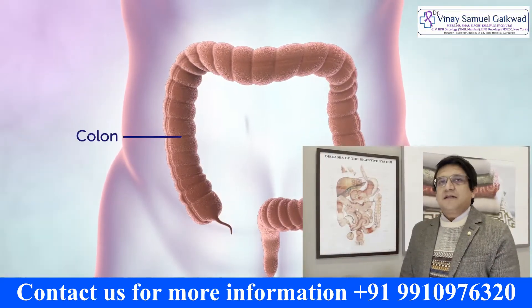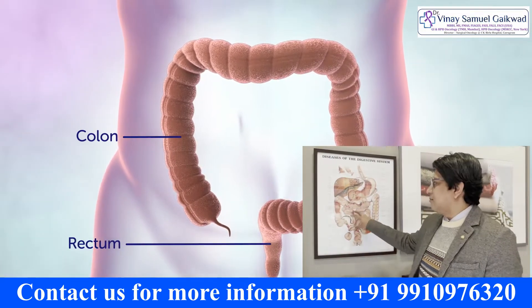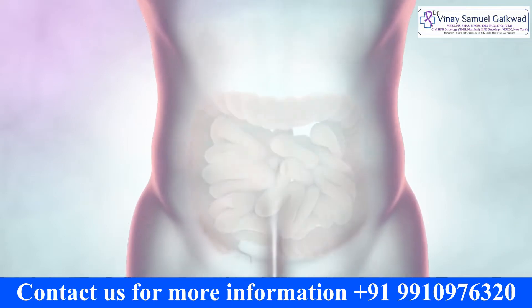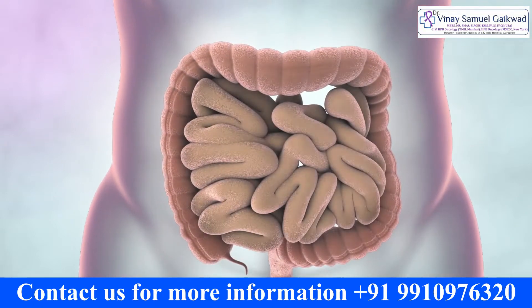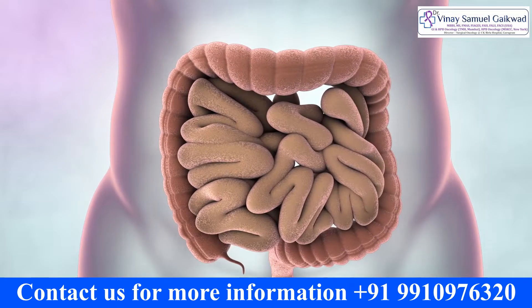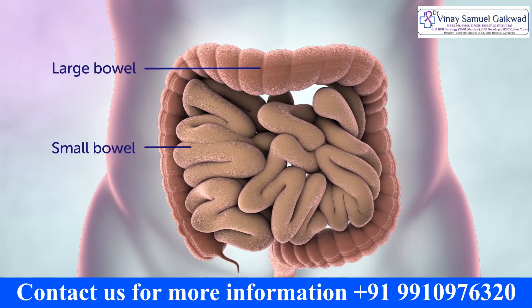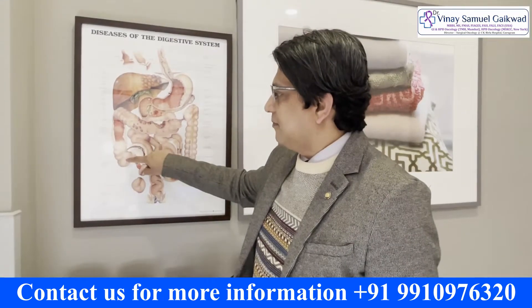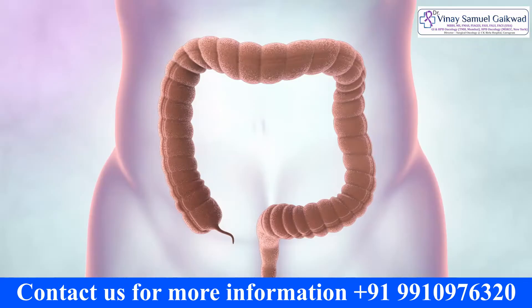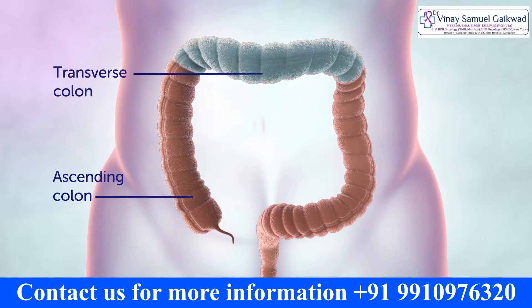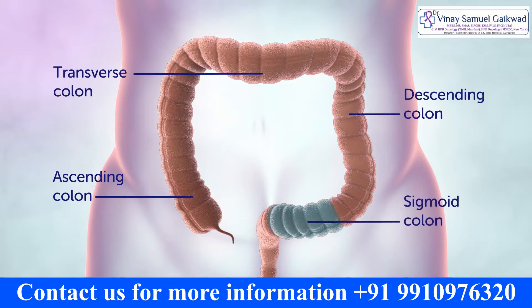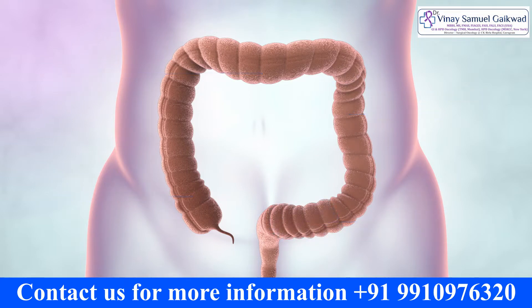First we have to understand what is the colon. If you look at this diagram here, the center part is the small intestine and the part in the periphery is the large intestine or colon. The small intestine is creeping into the cecum, where the appendix is attached. The part going up is the ascending colon, then the hepatic flexure near the liver, the transverse colon, the splenic flexure near the spleen, the descending colon, sigmoid colon, and rectum.